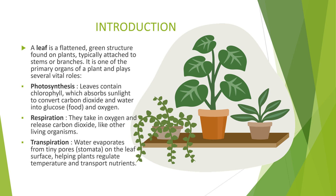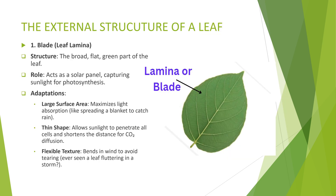First, let's look at the external structure of a leaf. The main parts include the blade, petiole, and veins.